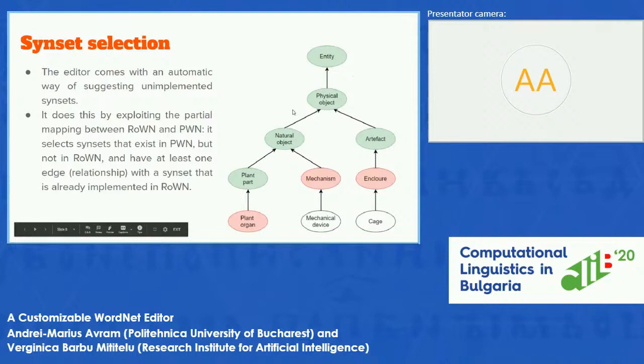The white nodes are synsets that are not implemented in the Romanian WordNet and don't have an edge with an already implemented common synset.